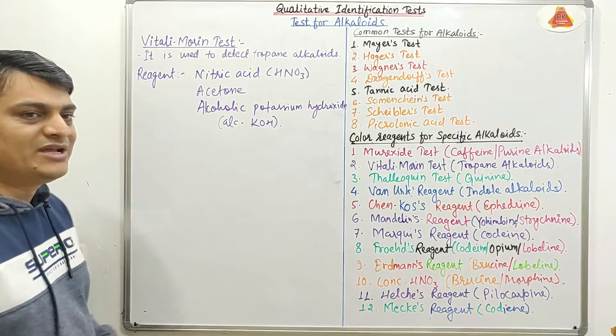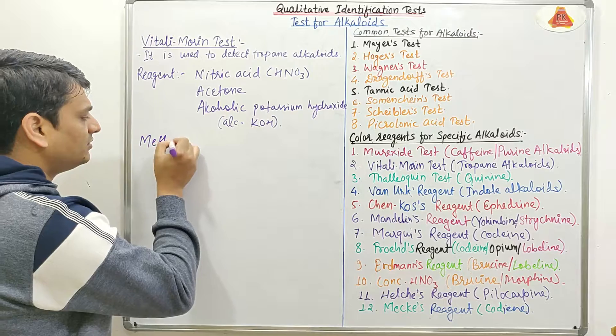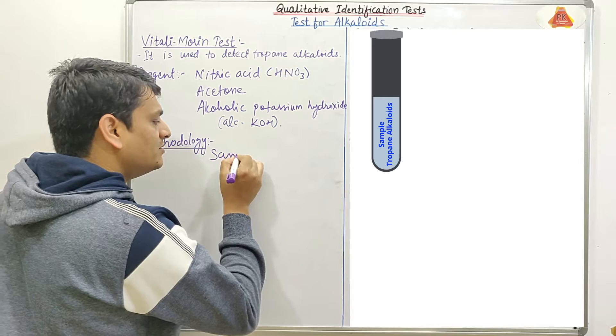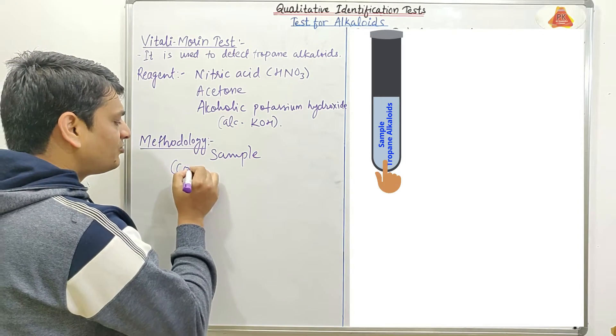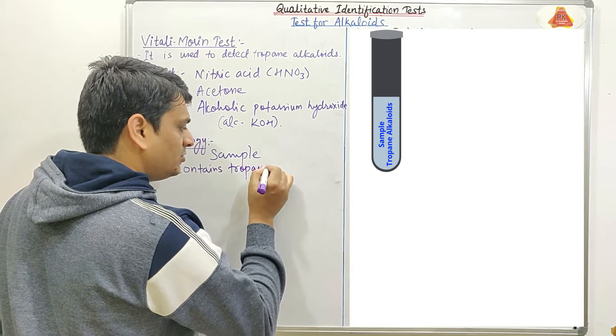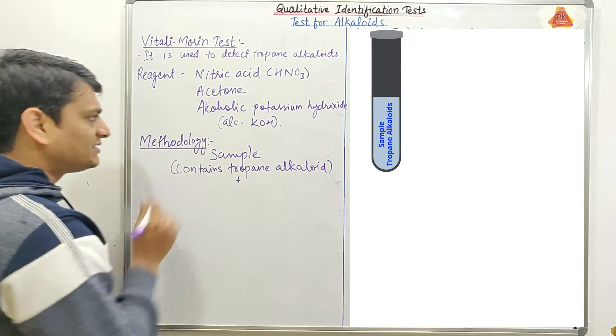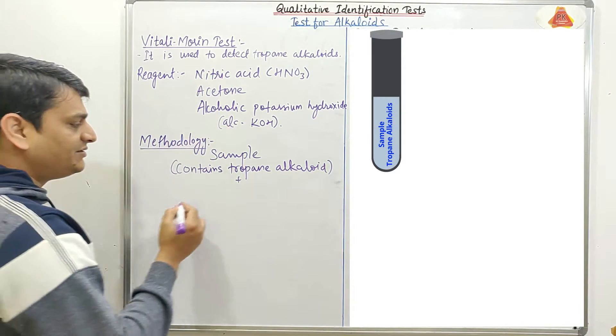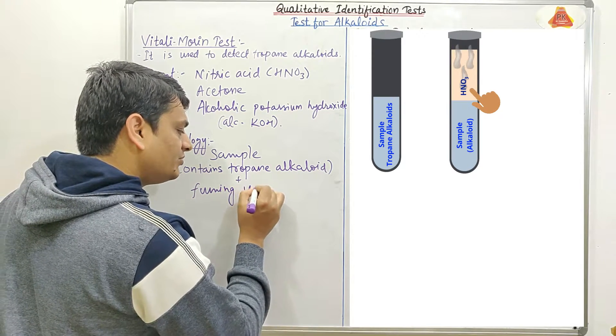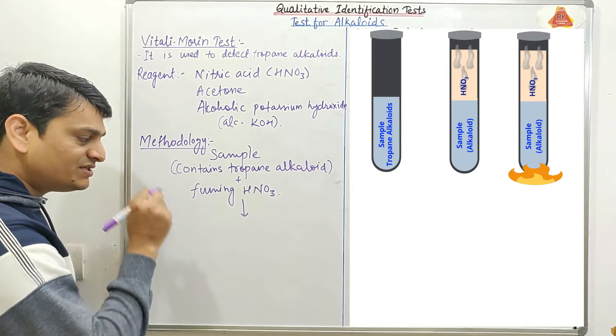So these three chemicals will be used for Vitali Morin test. Now coming to the methodology. So in the methodology, first we will take the sample and this sample should contain tropane alkaloids. After that in this sample, we will add fuming nitric acid, fuming HNO3. In next step, we will evaporate this mixture to dryness.